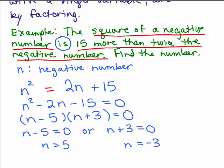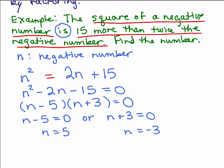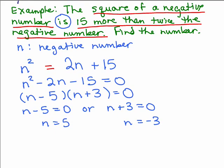Now, here's where word problems are very different than just solving equations. We have to go back and make sure that these solutions make sense when we read the original problem. It says, the square of a negative number is 15 more than twice the negative number. Find the number.